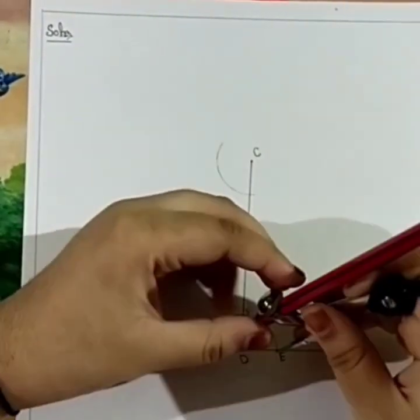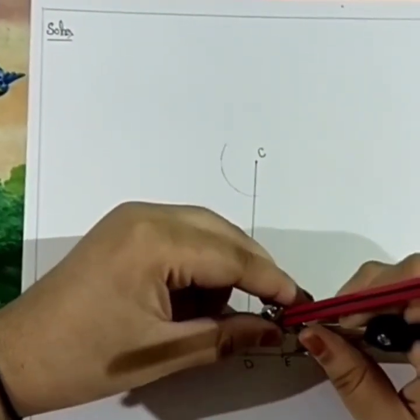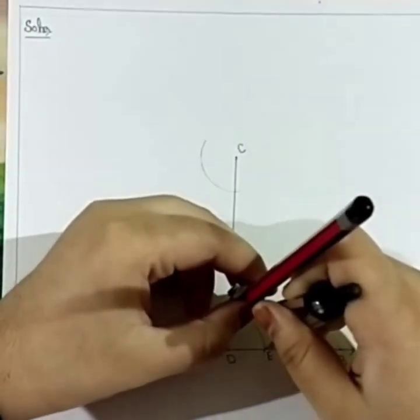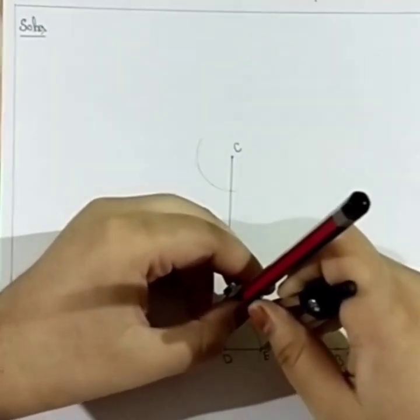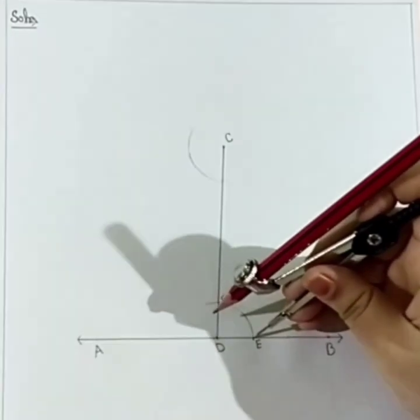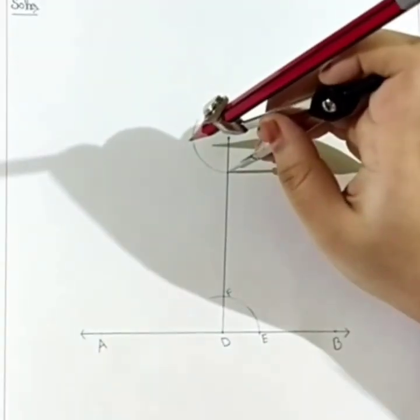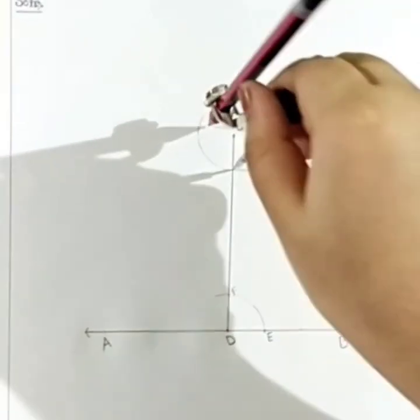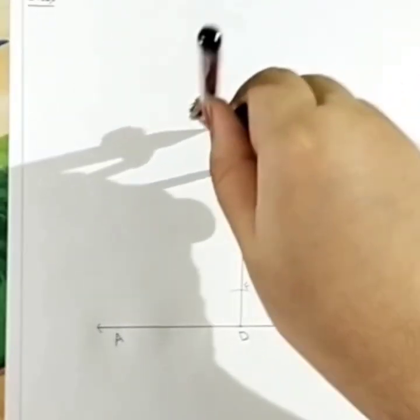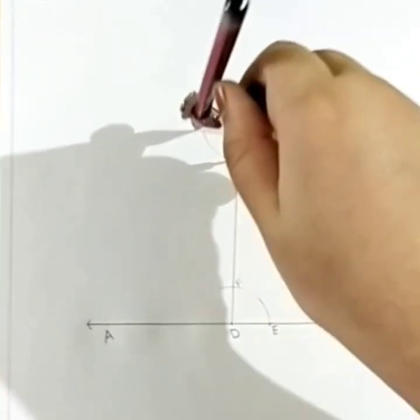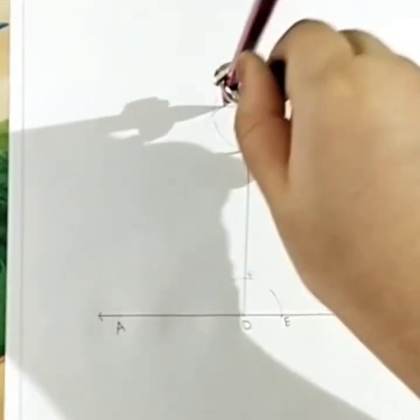Now, we will take the measurement of E and F radius. Like this. Done. Now, from here, we will draw here. Now, it intersects from the previous arc.